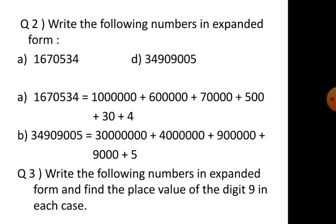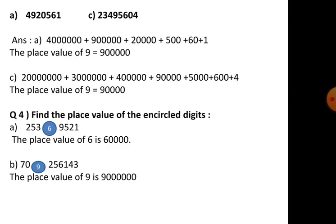Question 3: write the following numbers in expanded form and find the place value of digit nine. Previously we found the place value of digit seven; now we find digit nine. Make the place value chart in rough, place the numbers, write in expanded form. For number (a), nine is in the lakhs place. For number (c), nine is in the ten thousands place.